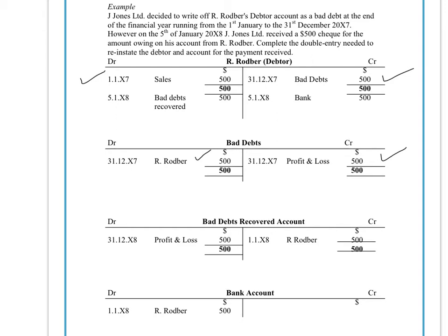The reason for that, of course, is that as a result of Rodber not paying, we've lost $500, so we have to put that as a cost of running the business during that financial year.